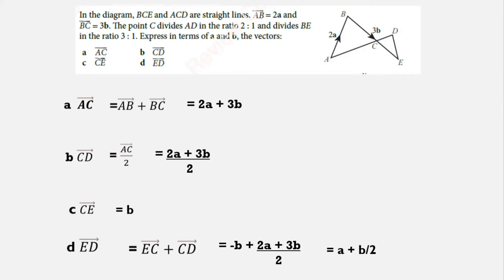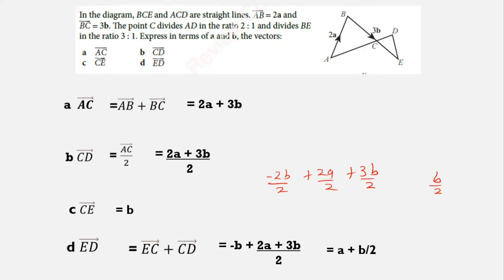Let me explain the simplification. It is −b = −2b/2, plus 2a/2, plus 3b/2. Taking −2b + 3b gives b/2, and this is a/2. The 2s cancel, giving us a + b/2.